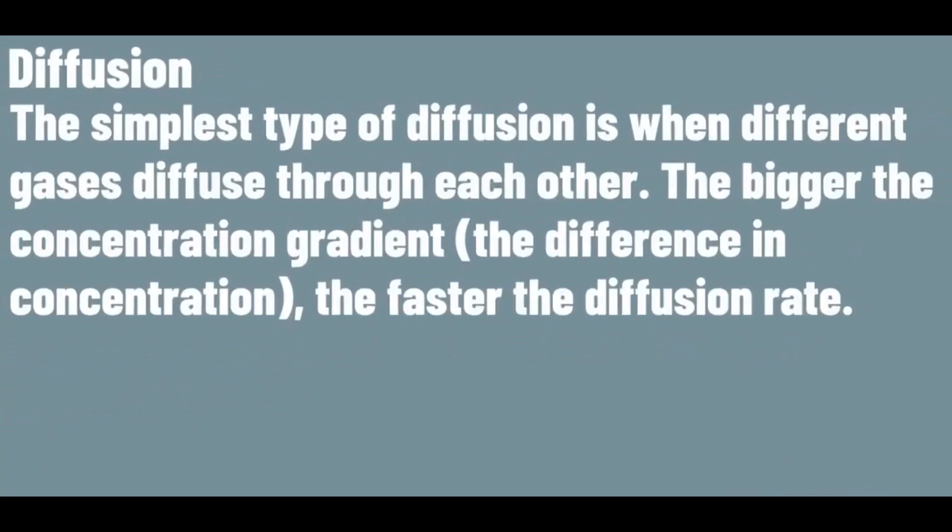The simplest type of diffusion is when different gases diffuse through each other. The bigger the concentration gradient, the faster the diffusion rate.